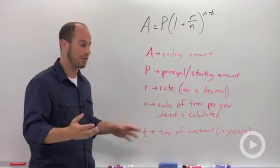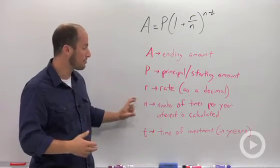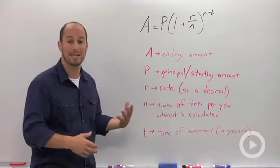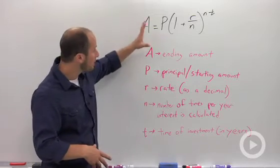So n is just the number of times that interest is calculated. And lastly, t is the time of the investment in years. So it's sort of a weird-looking formula with a lot of variables going on...